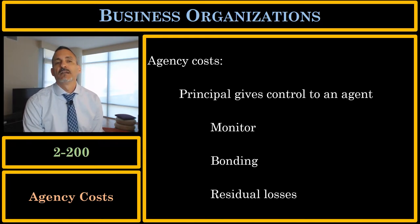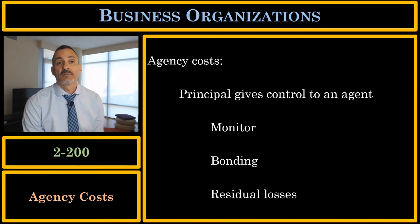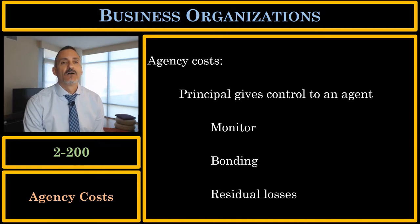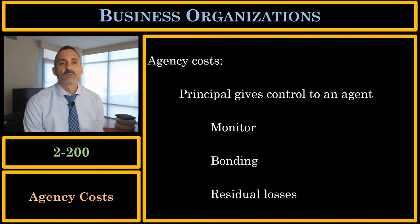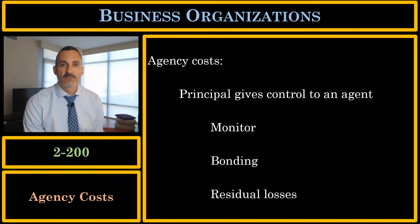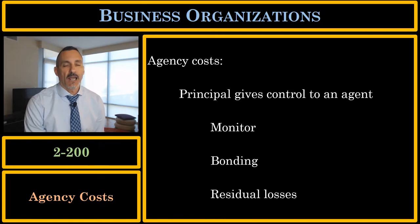How do we align the incentives? If the agent takes incentive compensation, the agent says: I will take as my compensation a percentage of the profits. Now the agent has the incentive to maximize the profits and her incentives are aligned with the principal who also wants maximum profits. That is a form of bonding. By taking incentive compensation, the agent is saying to the principal: you do not have to monitor me for diligence. The incentive compensation takes care of that — I will work diligently to maximize profits because I get paid a percentage of the profits.